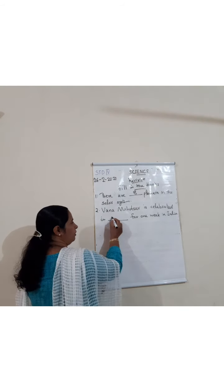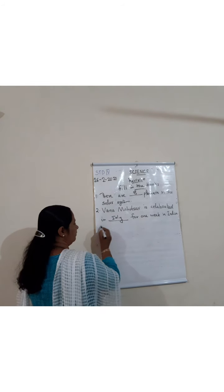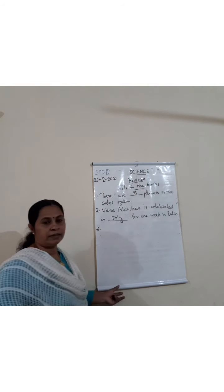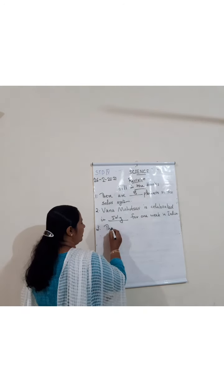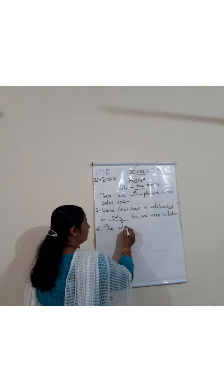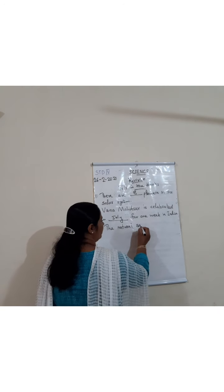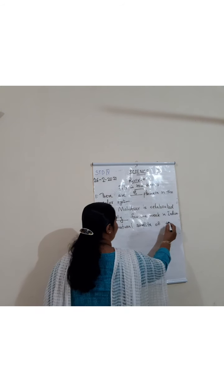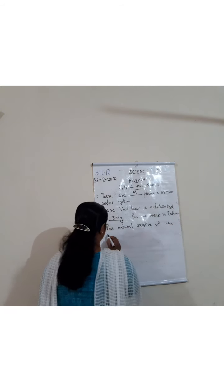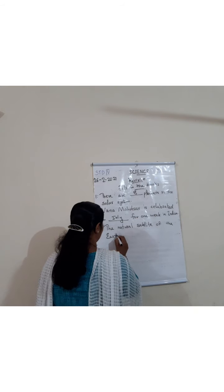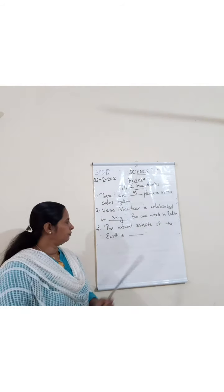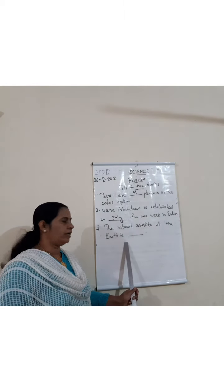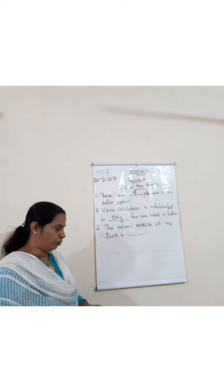Vana Maholsav is celebrated in July. The natural satellite of the earth is the moon.